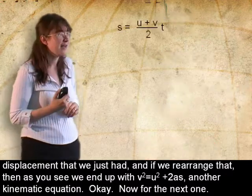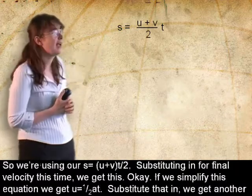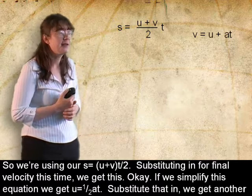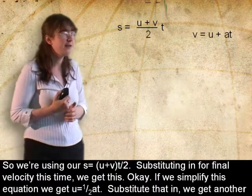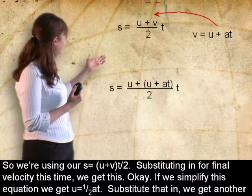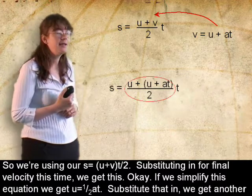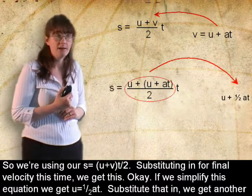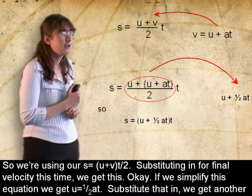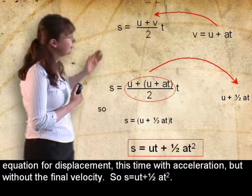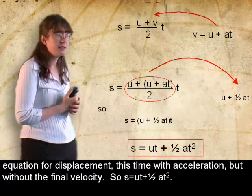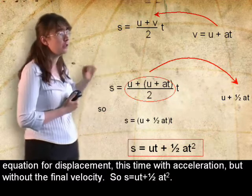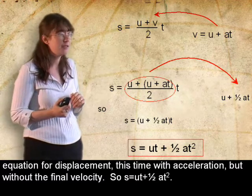Okay, now for the next one. So we're using our s is u plus v over 2 multiplied by t. Substituting in for final velocity this time, we get this. If we simplify this equation, we get u plus a half at. Substitute that in, we get another equation for displacement, this time with acceleration, but without the final velocity. So s is ut plus a half at squared.